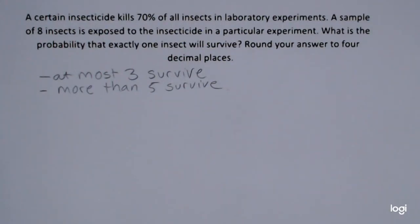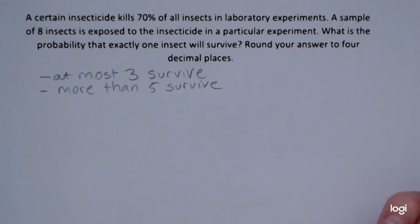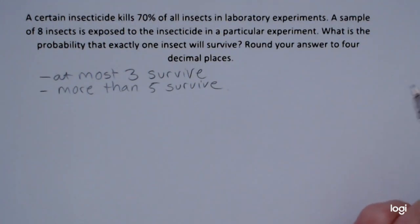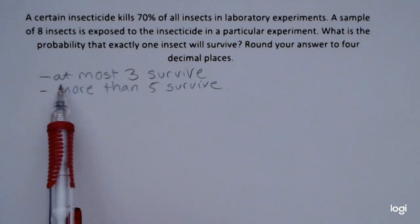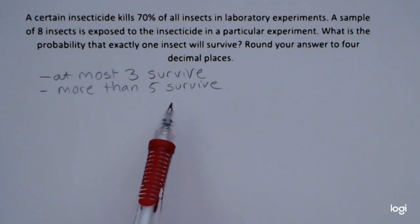This video is an example of using the binomial probability distribution. A certain insecticide kills 70% of all insects in laboratory experiments. A sample of eight insects is exposed to the insecticide in a particular experiment. What is the probability that exactly one insect will survive? I'm also going to extend this problem to find the probability that at most three survive and more than five survive.